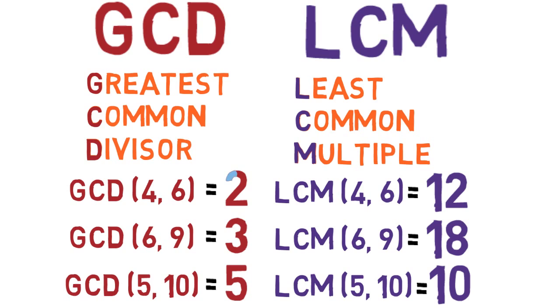Notice that the GCD of two numbers is always less than or equal to the lower number, while the LCM is always greater than or equal to the greater number.